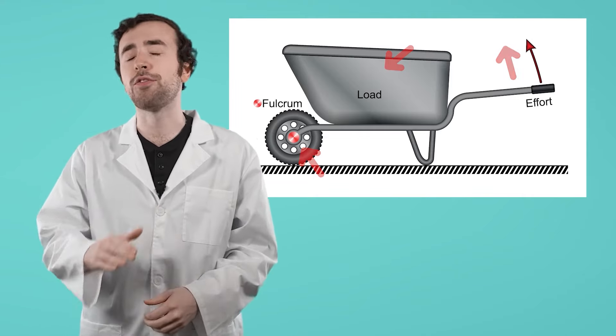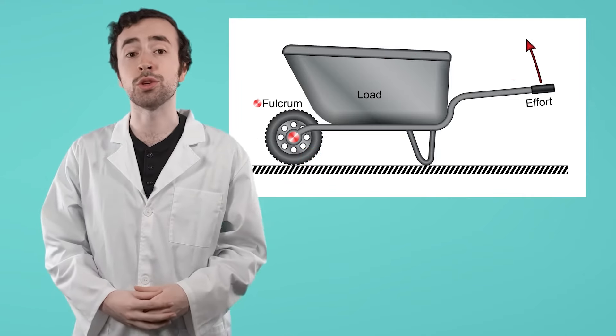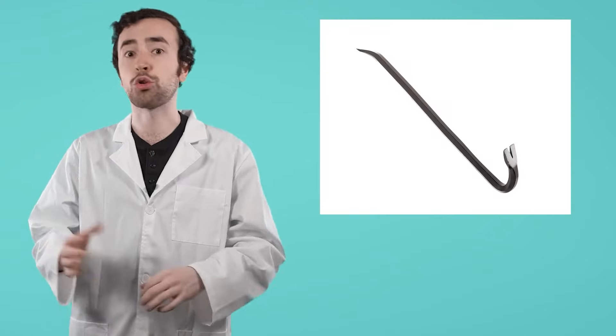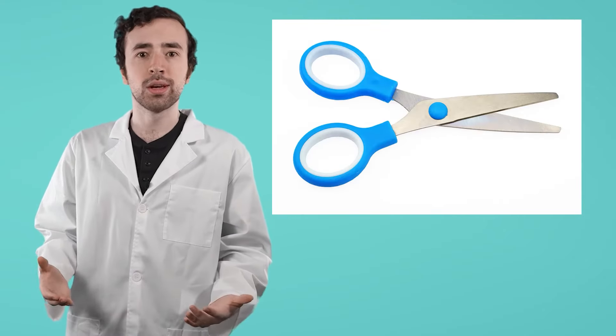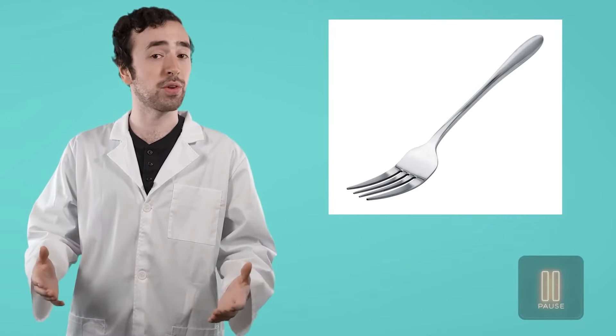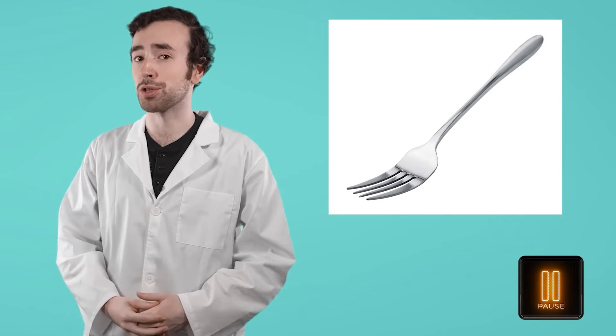Seesaws and wheelbarrows are far from the only levers we use in our day-to-day lives. Once you know what to look out for, beams and fulcrums, you will notice levers everywhere. Crowbars, scissors, those little handles you use to flush toilets, even forks are all levers. Can you think of some other examples of levers? Pause the video here to jot down your thoughts in your guided notes.